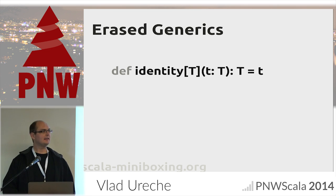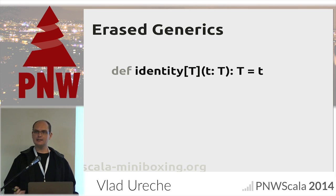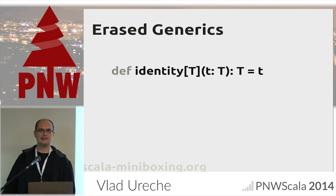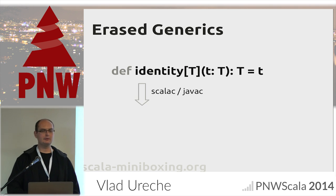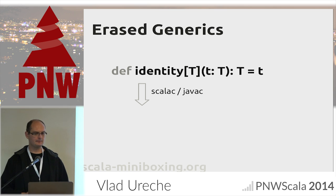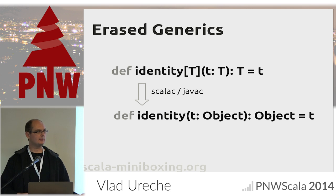If we take an identity method which takes a type parameter T, we can say for any type T we promise to return the same type, and we do so using generics. But when we compile this with ScalaC or JavaC, what we get is somewhat different — a method that takes an Object and returns an Object.